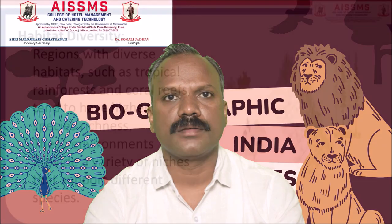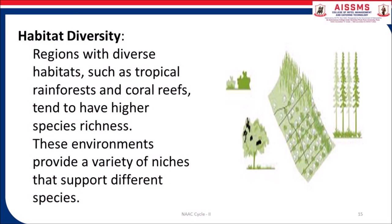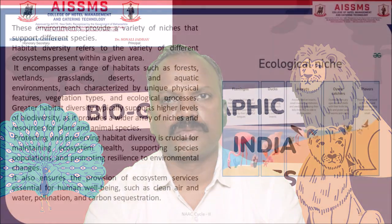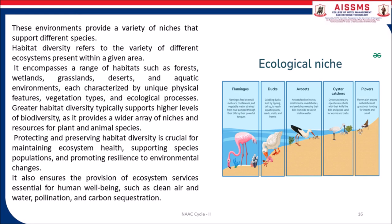Regarding habitat diversity: regions with diverse habitats such as tropical rainforests and coral reefs tend to have higher species richness. These environments provide a variety of niches that support different species. Habitat diversity refers to the variety of different ecosystems present within a given area, encompassing forests, wetlands, grasslands, deserts and aquatic environments, each characterized by unique physical features, vegetation types and ecological processes. Greater habitat diversity typically supports higher levels of biodiversity as it provides a wider array of niches and resources for plant and animal species.